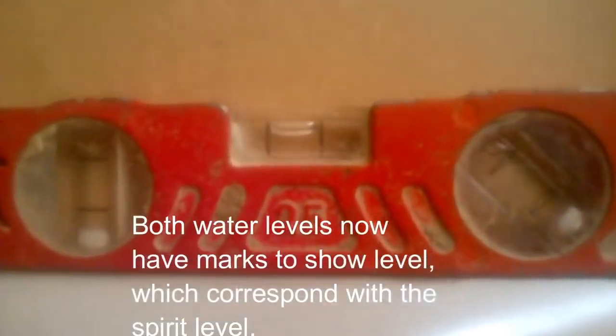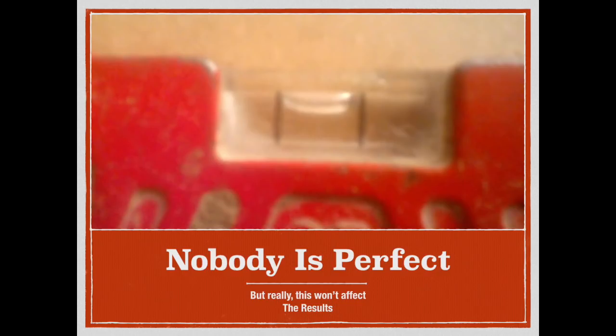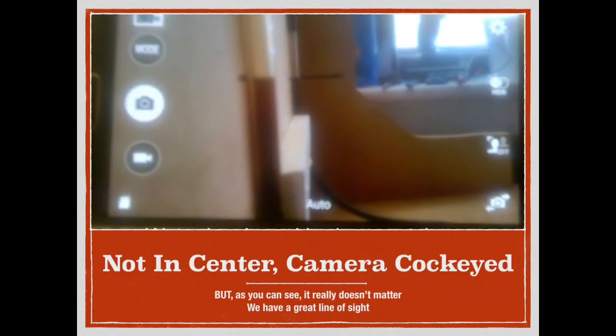Looks like he's got his water levels marked and he's got a level on there. Now here's his final setup. He's got his water level out there. You see his camera's all cockeyed. The thing's not in the center of the screen, so therefore it can't be at eye level, according to Phuket. But as you can clearly see, we've got a good line of sight here, and that's nicely leveled.